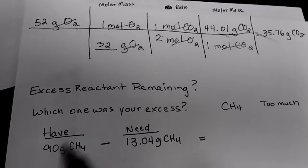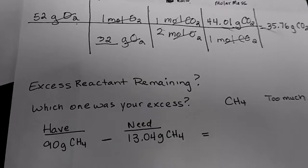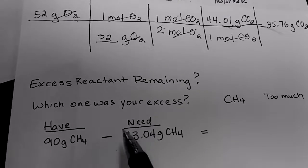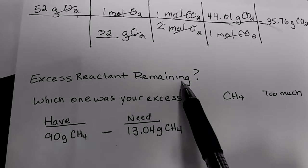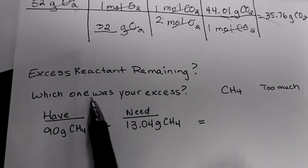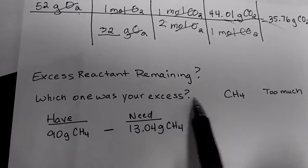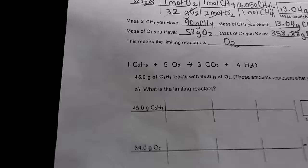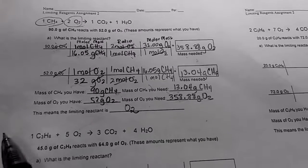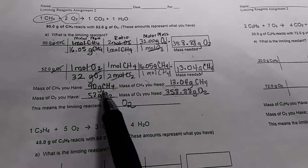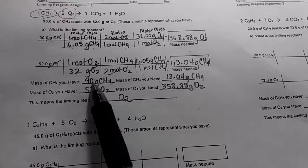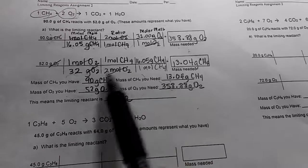For the last of the problems, we need to find out how much of the excess reactant remains. So first of all, which one was your excess? We found out from this information that our excess had to have been CH4. Because as you can see, we have 90, and we need 13.04, so we have more than what we need.